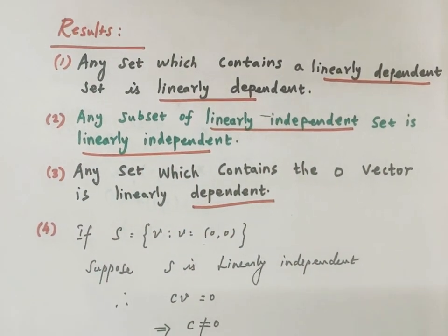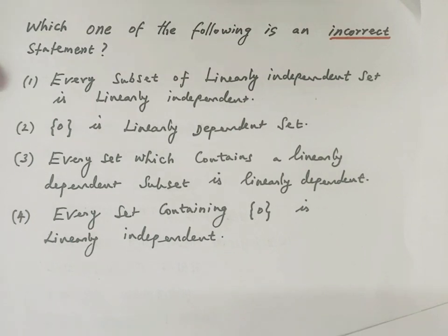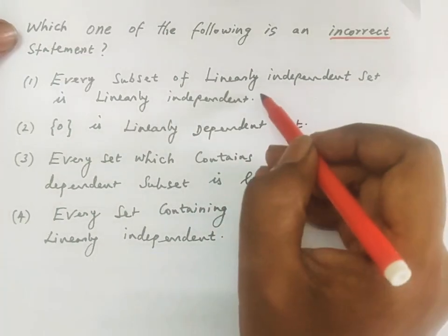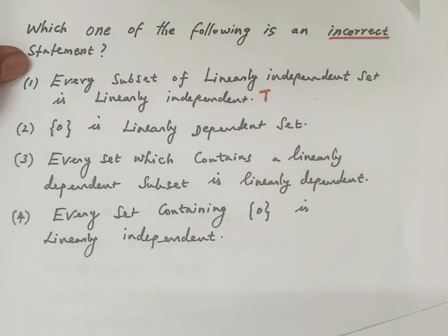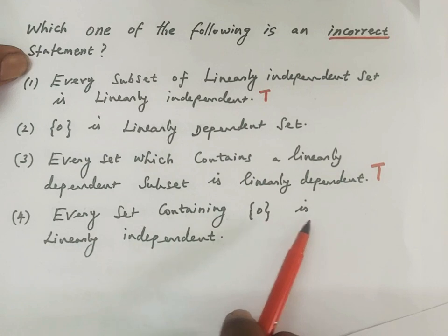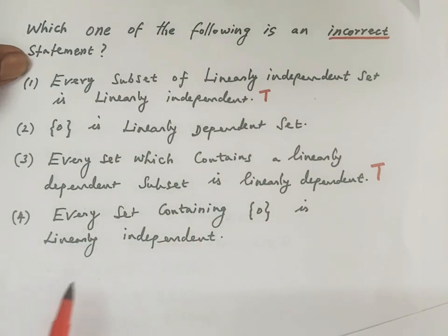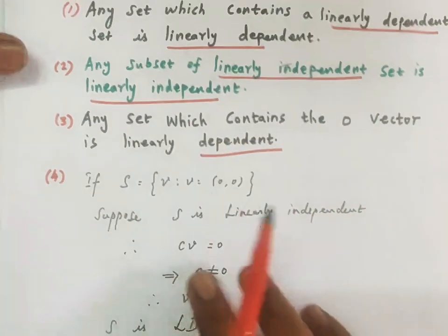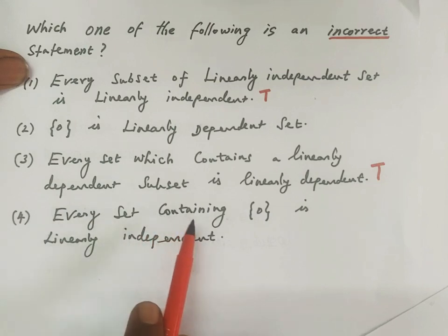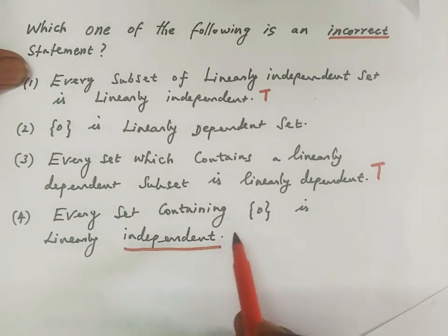Option 1 — every subset of a linearly independent set is linearly independent — that is true. Option 3 — every set which contains a linearly dependent subset is linearly dependent — that is true. Option 4 — every set containing the zero vector is linearly independent — that is wrong, that is false.